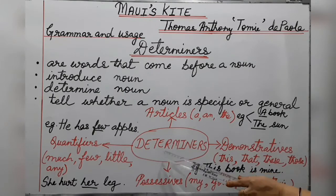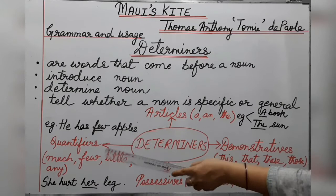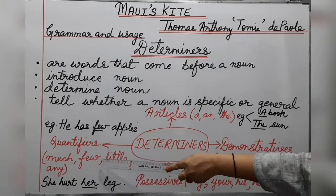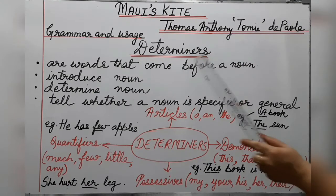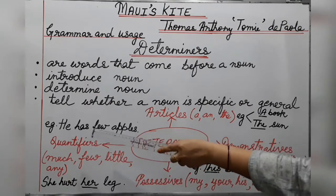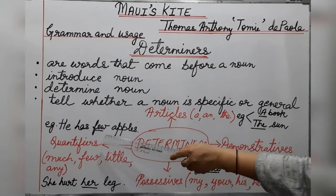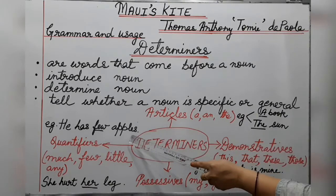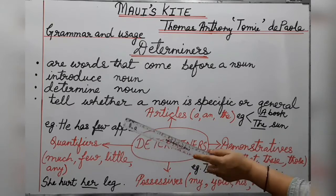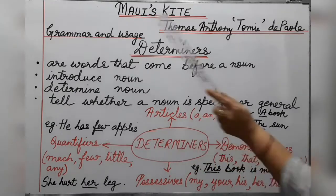Now the last type: quantifiers. Quantifiers tell the quantity of something. Examples are: much, few, little, any. For example, 'He has few apples.' Here we are using the determiner 'few,' which is a quantifier. 'Apples' is the noun, so apples is determined by the determiner 'few.'